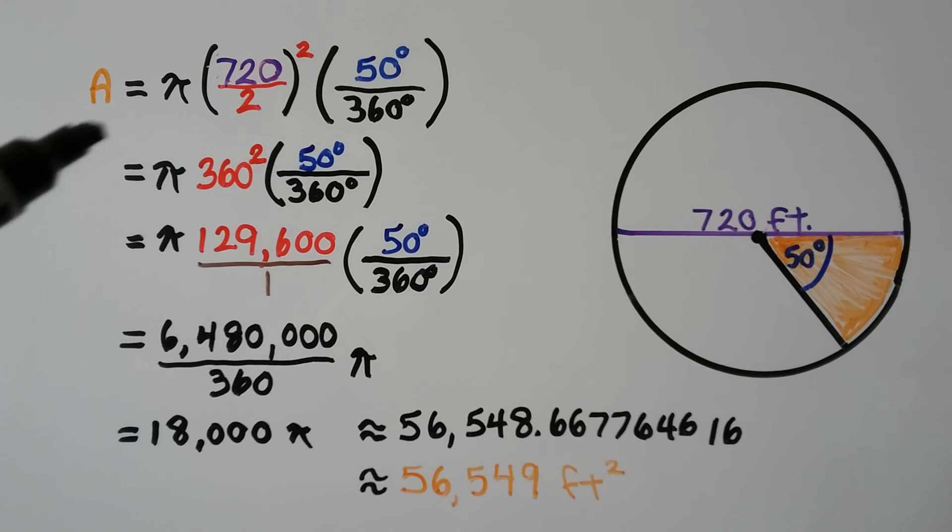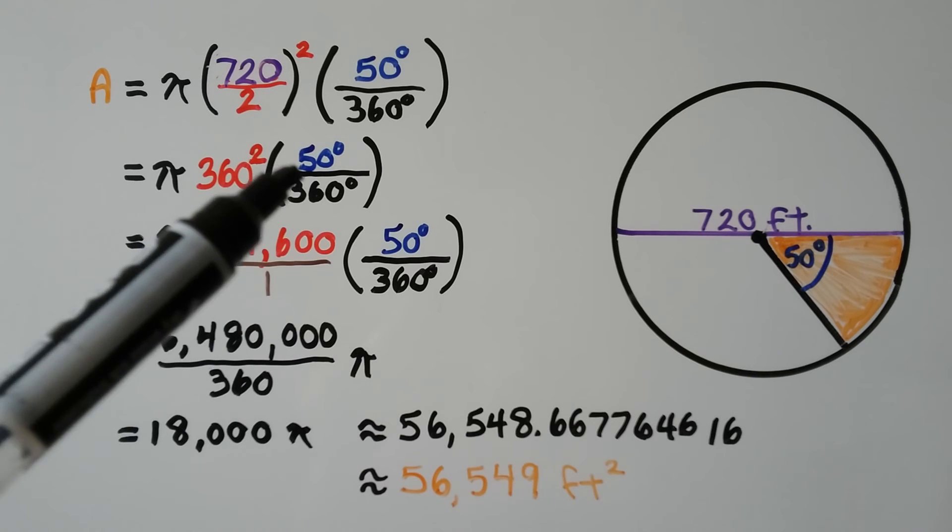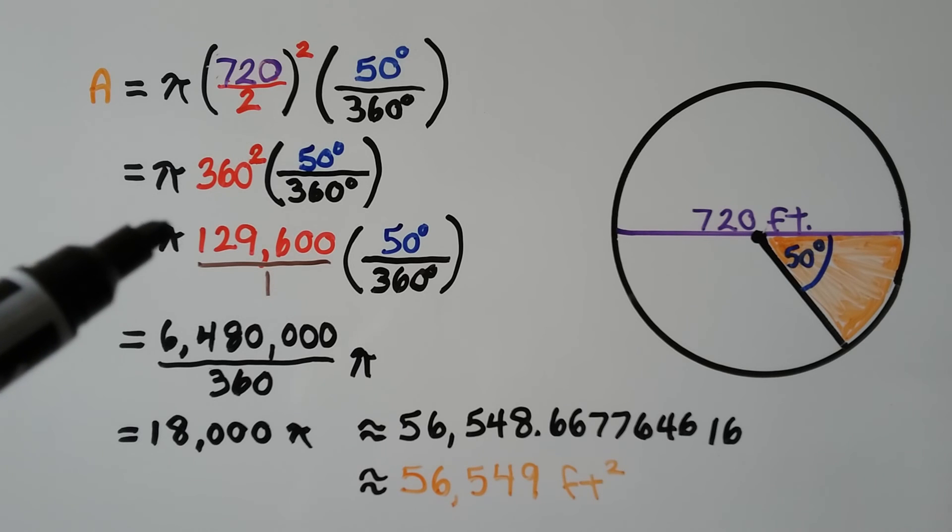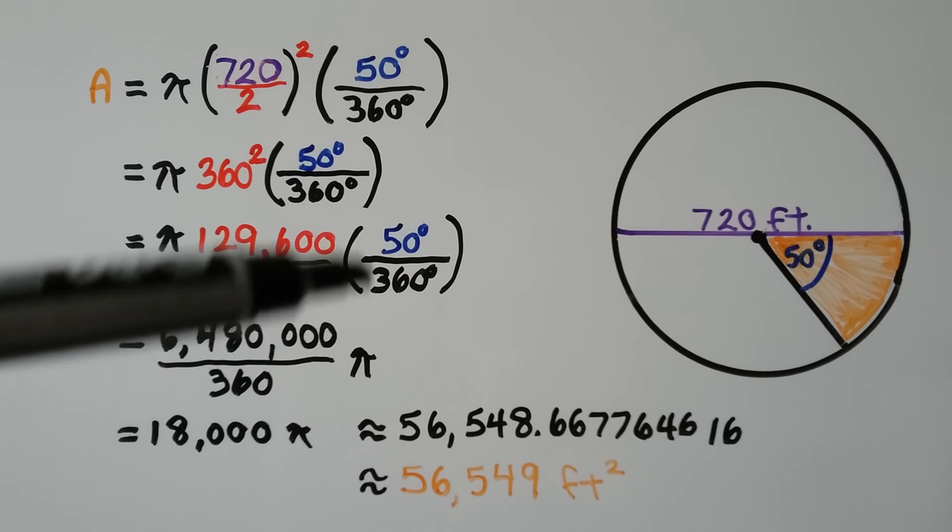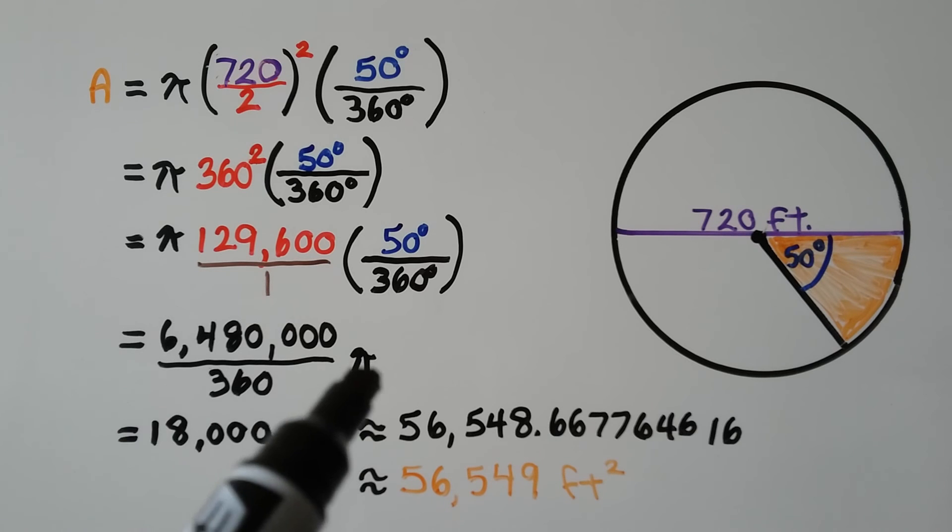So we have 360 squared, here we have our 50 degrees over the 360 degrees. 360 squared is 129,600. We multiply it to this, we get 6,480,000 over 360 pi.